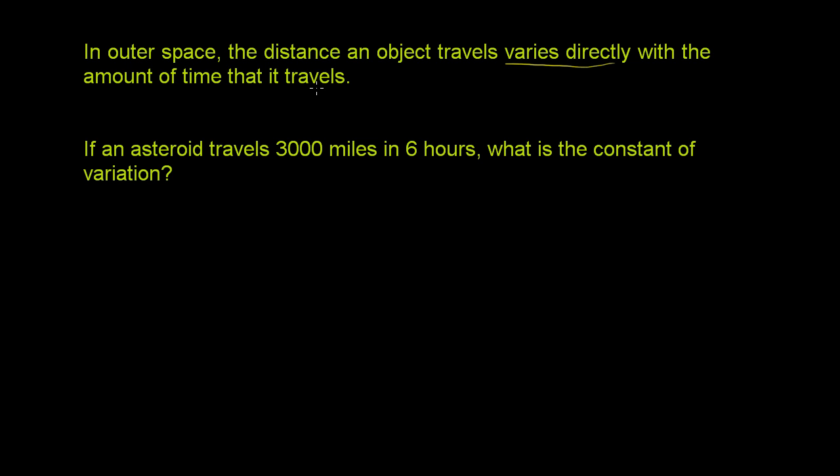If we think of it in terms of constants of proportionality and direct variation, we could say that the distance is equal to some constant times the time that it travels. The distance varies directly with the amount of time for this particular object.